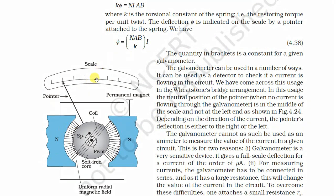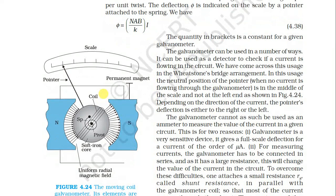When there is no current, the pointer is at the middle of the scale, not at the left end as shown in figure. Depending on the direction of the current, the pointer deflection is either to the right or to the left — we can observe the deflection of the needle in either direction.